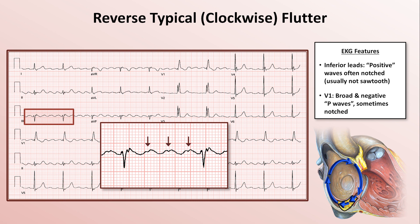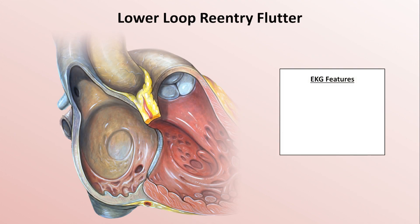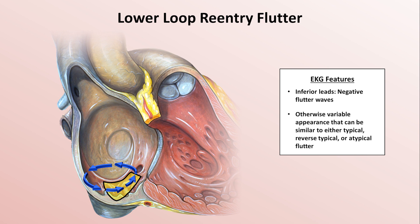Overall, there is greater variability in the appearance of reverse typical flutter than in typical flutter. In lower loop reentry flutter, the IVC forms the central area of block and the reentrant wavefronts simply travel around the IVC's entrance into the right atrium, including passing through the isthmus. The left atrium is passively depolarized similarly to typical flutter, resulting in negative atrial complexes in the inferior leads, but otherwise its appearance can be variable and resemble typical, reverse typical, or atypical flutter.